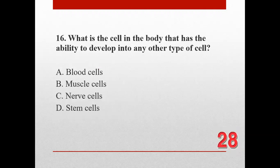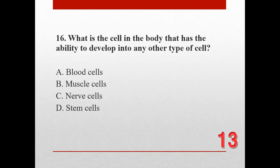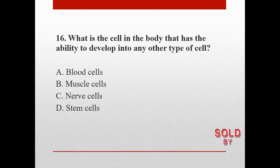Number sixteen. What is the cell in the body that has the ability to develop into any other type of cell? A. Blood cells, B. Muscle cells, C. Nerve cells, and D. Stem cells. The correct answer is D. Stem cells.